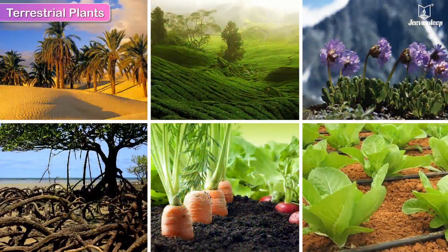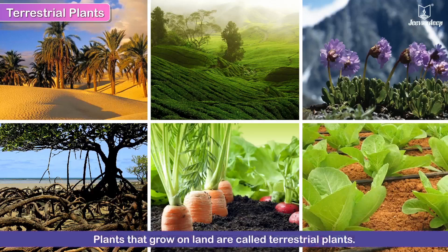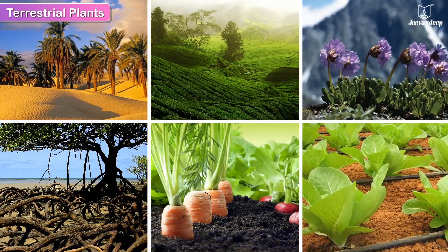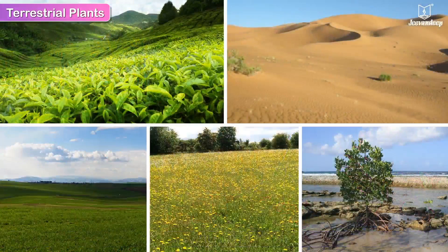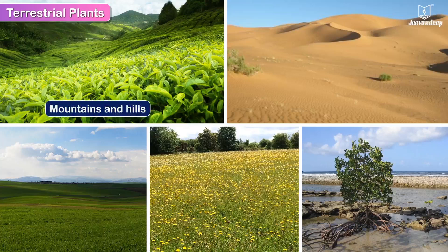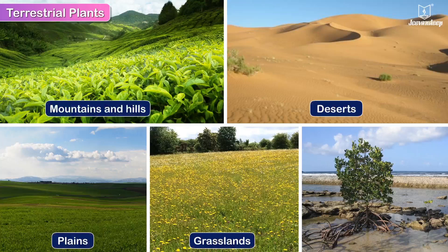Terrestrial plants are plants that grow on land. They get their name from the Latin word terra, meaning land. Terrestrial plants grow on different landforms such as mountains and hills, deserts and plains, grasslands and wet, marshy places.